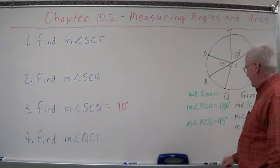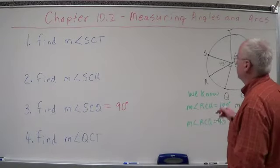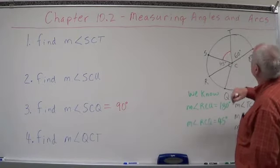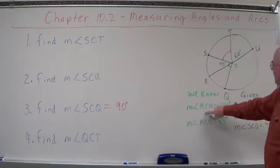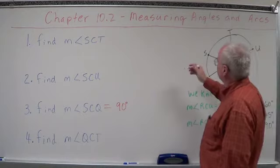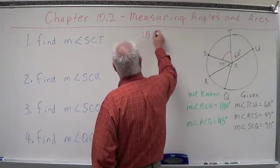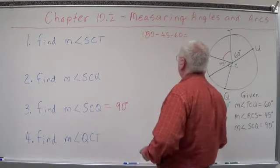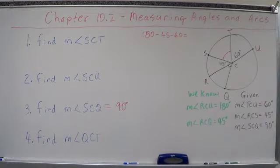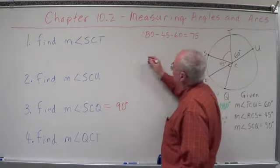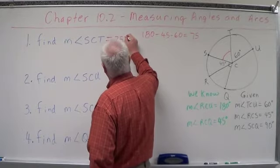Now let's look at SCT. On number one, we need to find the angle SCT right here. Well, what do we know? RCU is 180, we know 45, and we know 60, so if we take 180 minus 45 minus 60. Somebody help us out. What do we get? 180 minus 60 is 120. 120 minus 45 would be what? I think that's 75, so this will equal 75 degrees.